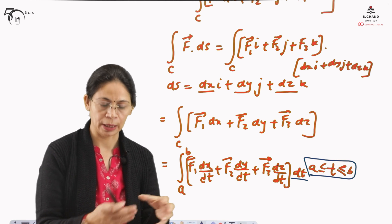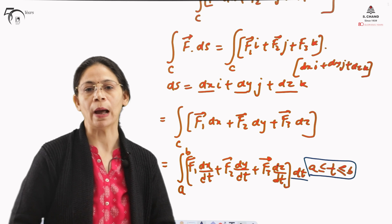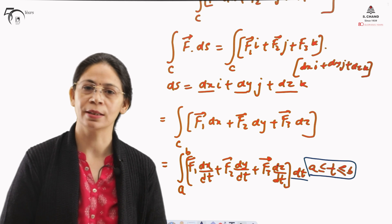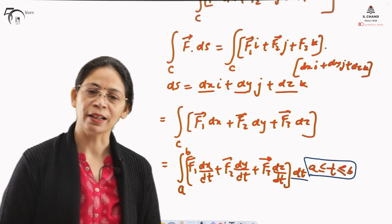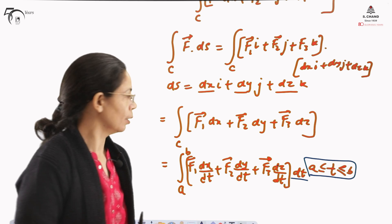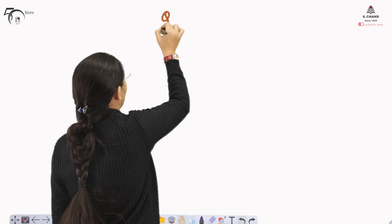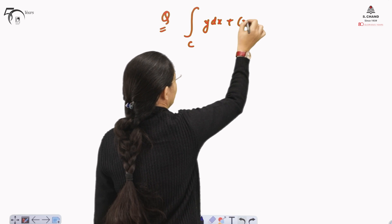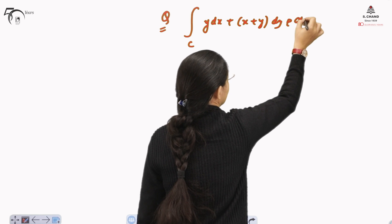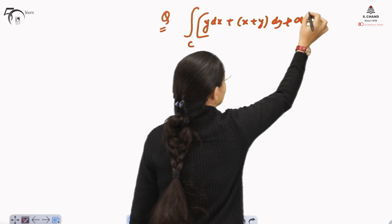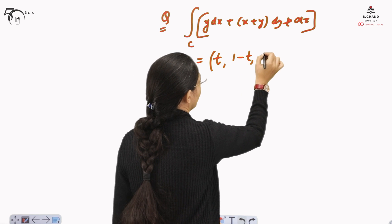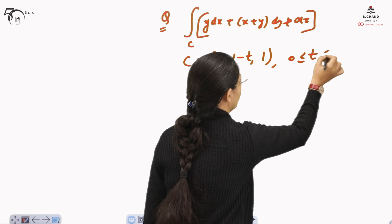So if the integral is given in terms of X, Y, Z, we can evaluate it directly, and the second way is to use the parametric form. We will make this clear using a question. Let us say the question is given as the integral of Y·dX plus (X plus Y)·dY plus dZ over C, where C is given as (T, 1 minus T, 1) and T is varying from 0 to 1.